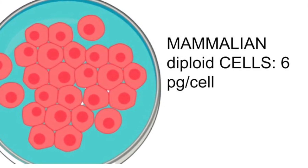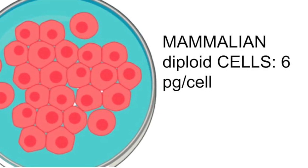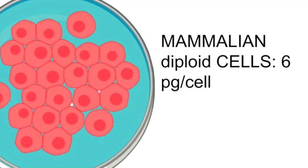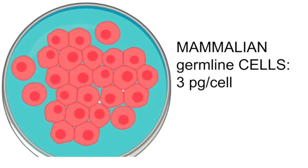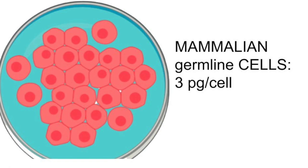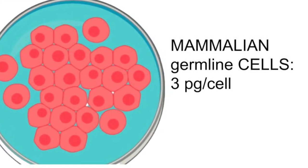If you're looking at haploid cells, so cells that only have one set of chromosomes, the only cells that have it in our body are your germ cells. Germ cells are your sperm and eggs, and these have half of that, so instead of six picograms you have three picograms.